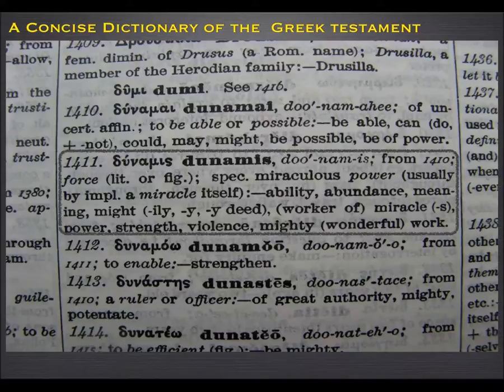It's telling us that the translators of the King James Bible have actually translated the single Greek word dunamis by all those different English words. So sometimes they came across dunamis and they translated it as ability, sometimes as abundance, sometimes as meaning, sometimes as might, sometimes as power, sometimes as strength. You can see the way it works out.